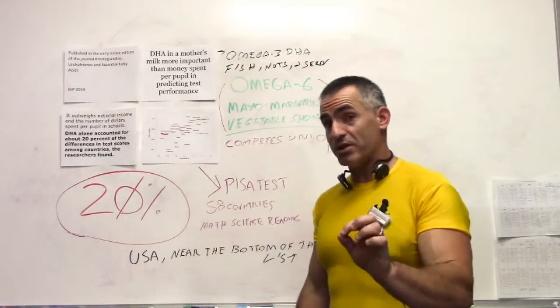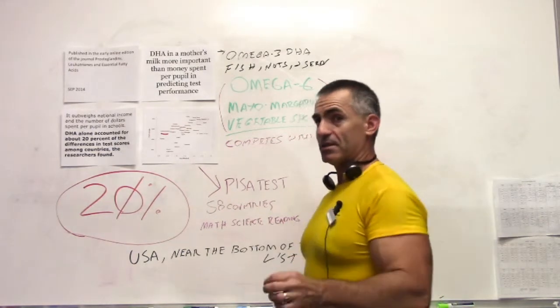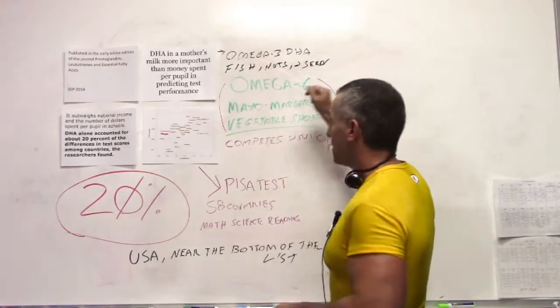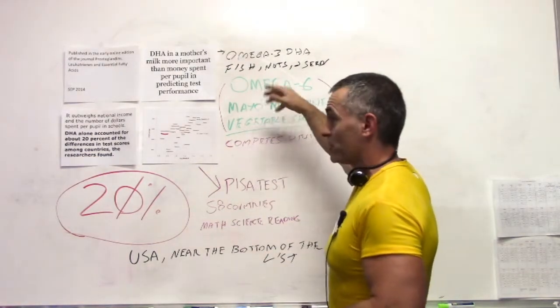DHA in the mother's diet, again part of your omega-3 family. The reason being is this, they also found out that the omega-6s in the diet from mayo, maize, margarine, vegetable shortening, and so on and so forth, the bad stuff.